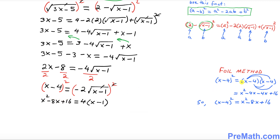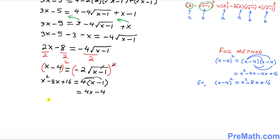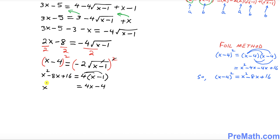Now distribute 4 across (x minus 1) on the right-hand side: that gives 4x minus 4. The left-hand side remains x squared minus 8x plus 16.